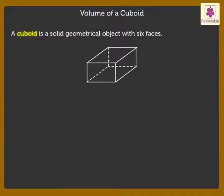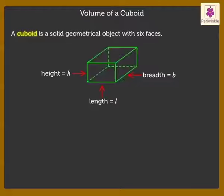In the figure, the length, breadth and height are marked. We get the volume of a cuboid by multiplying its length, breadth and height.